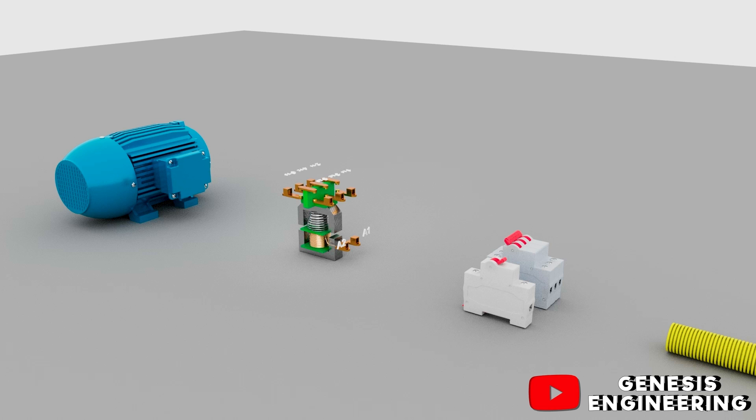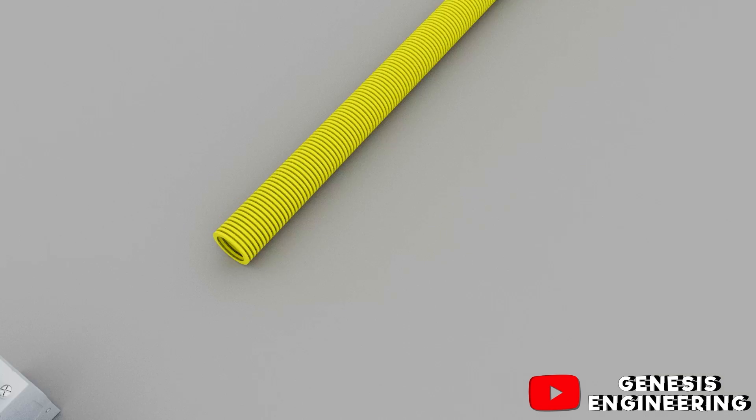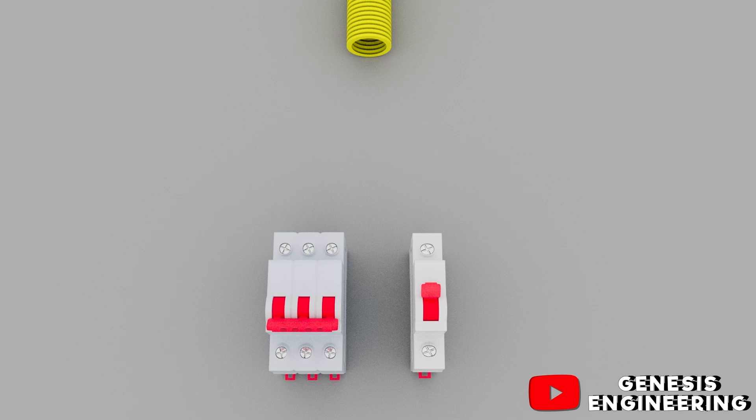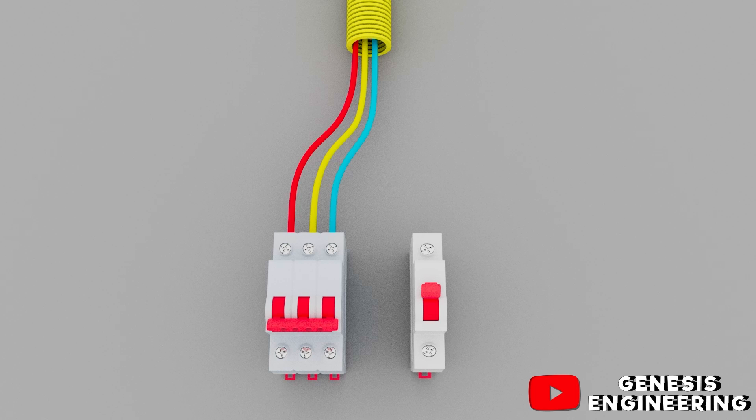Starting by connecting the contactor inputs, we first have the three-phase conductors connecting to the three-pole miniature circuit breaker MCB and then we leave with one phase to connect to the one-pole miniature circuit breaker MCB.